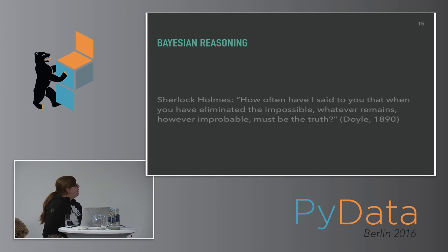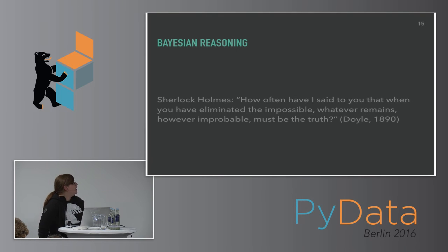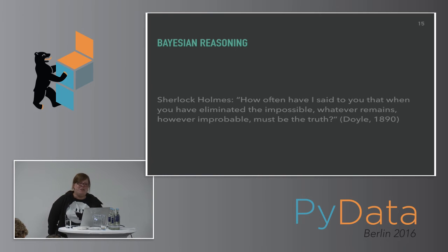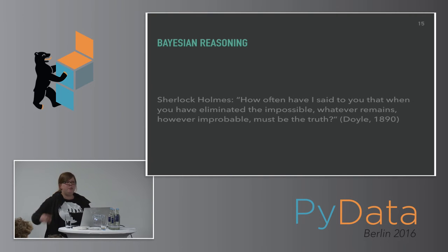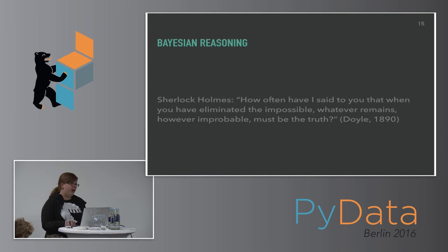Bayesian reasoning can be nicely explained with this quote from Sherlock Holmes to Watson: 'How often have I said to you that when you have eliminated the impossible, whatever remains, however improbable, it must be the truth.' With Bayesian reasoning, we update our beliefs about our data when we gather evidence. For example, we think we have a conversion rate of 4%, and the more data we gather throughout our experiment, the more we can either confirm or deny this prior conviction.